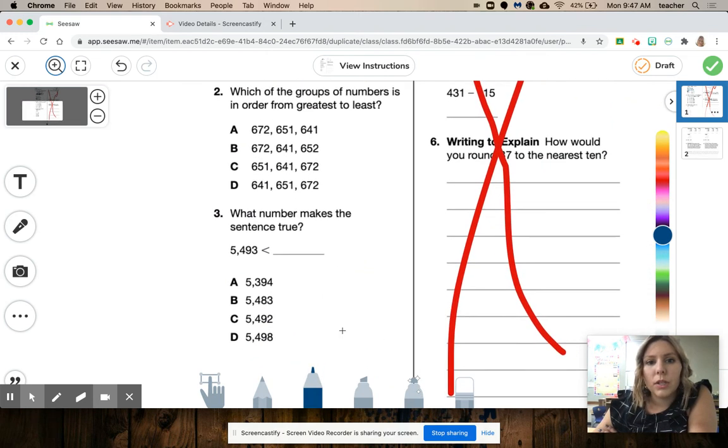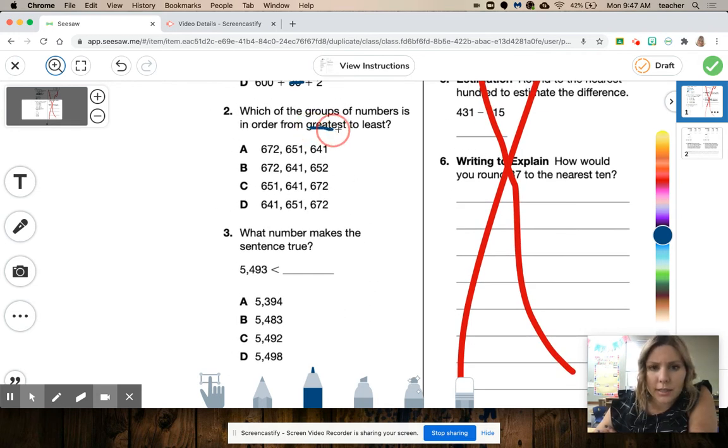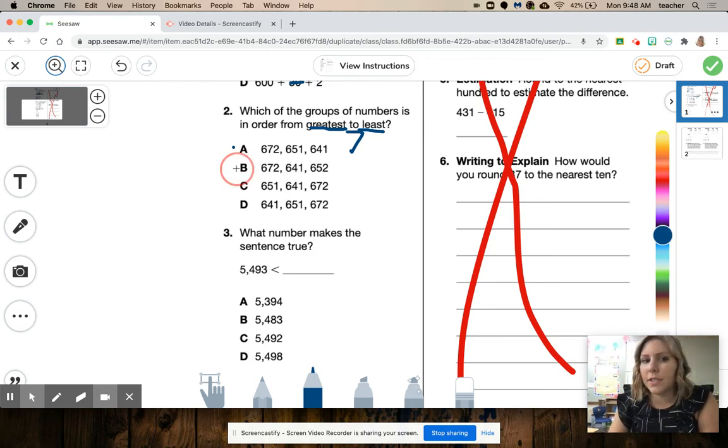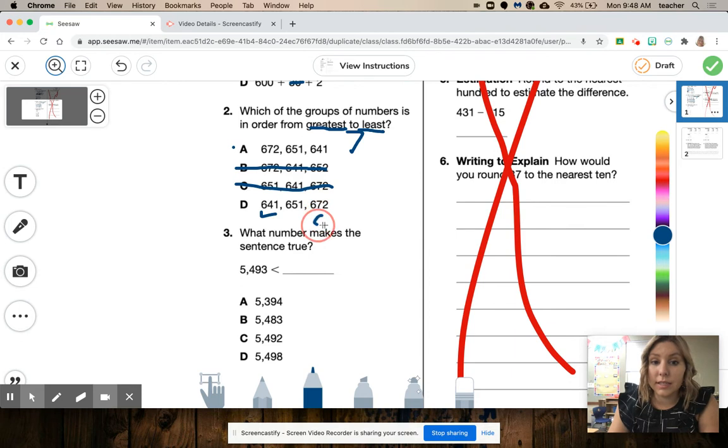Number two, which of the groups of numbers is order from greatest to least, that means the biggest to the smallest. 672, 651, 641. This one's the biggest and this one is the smallest. So it could be A. 672, 641, 652. Well, 41 is less than 52. So it's not B. 651, 641, 672. Those are all mixed up also. 641, 651, 672. That's least to greatest. That's the smallest to biggest. So I know it's not that one. The answer is A.